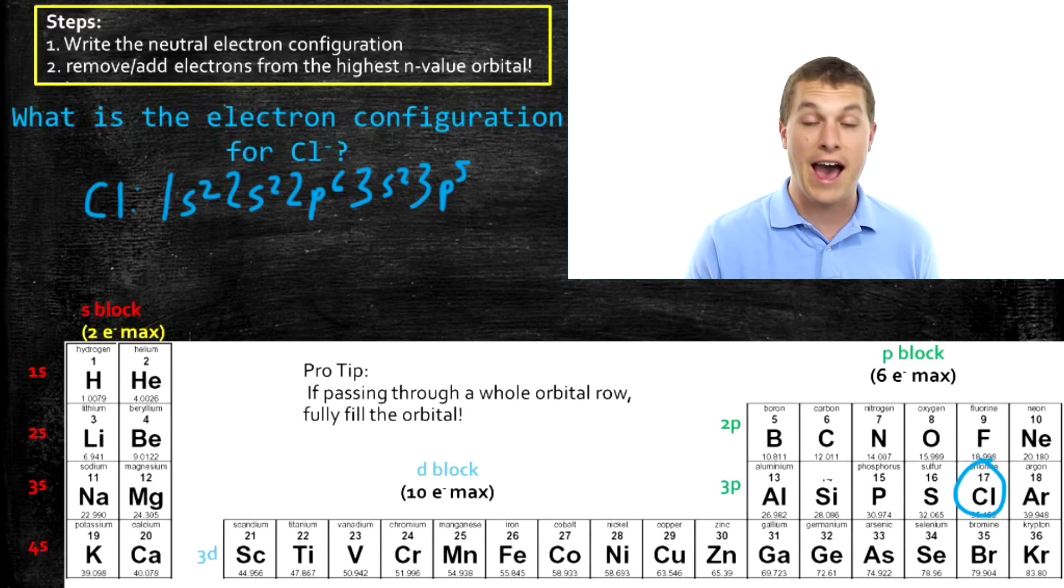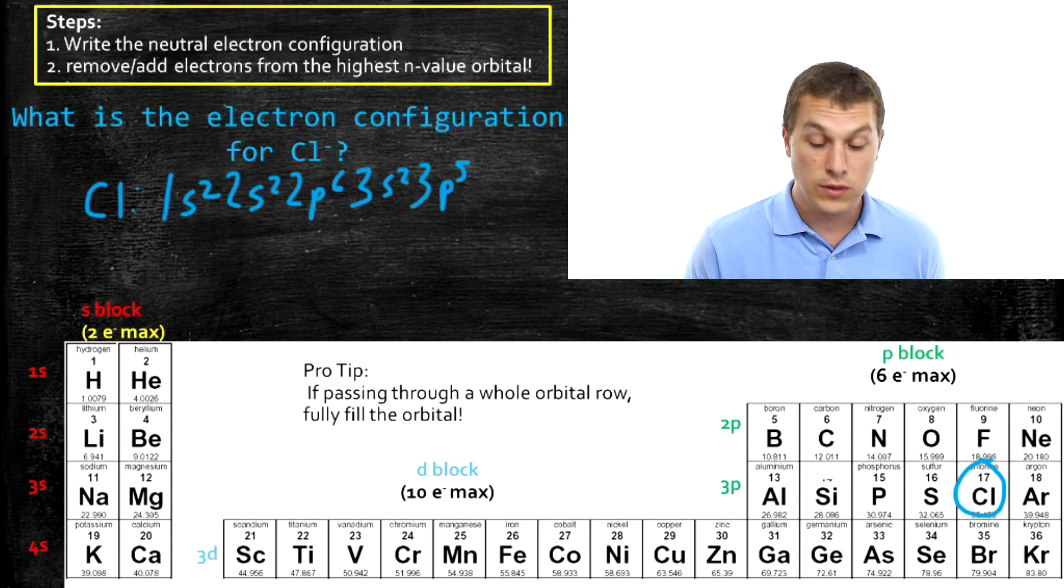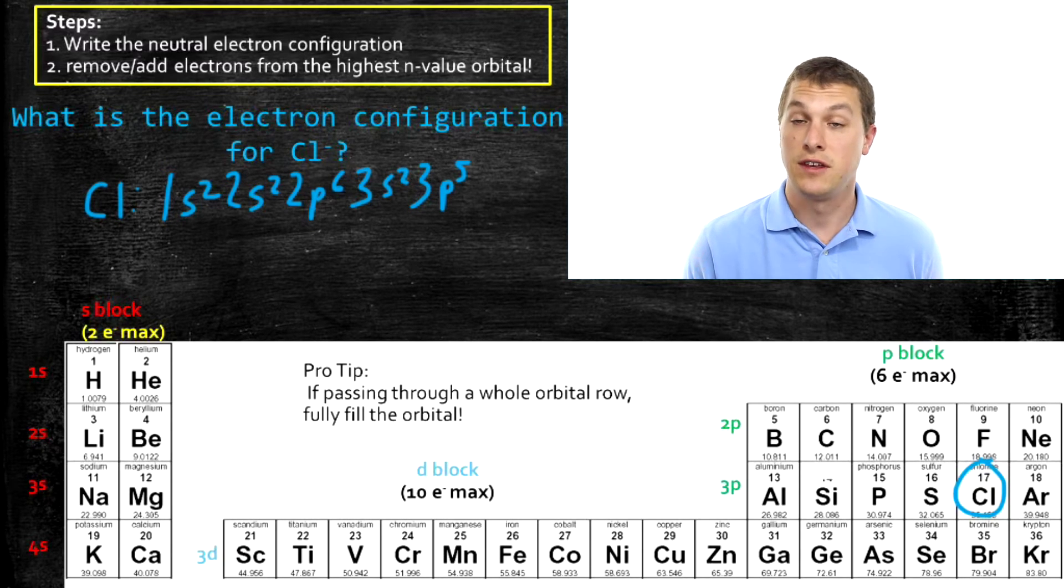And now what we're going to do is we're going to add or remove electrons to the highest n value orbital. So since chlorine's negatively charged, that means it's gained electrons.